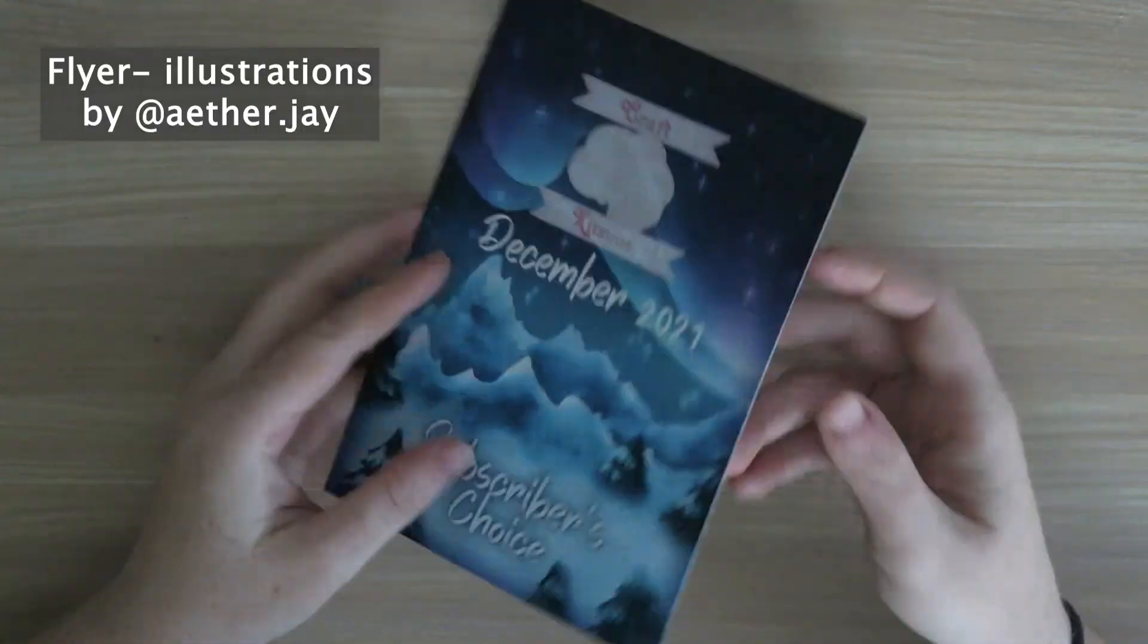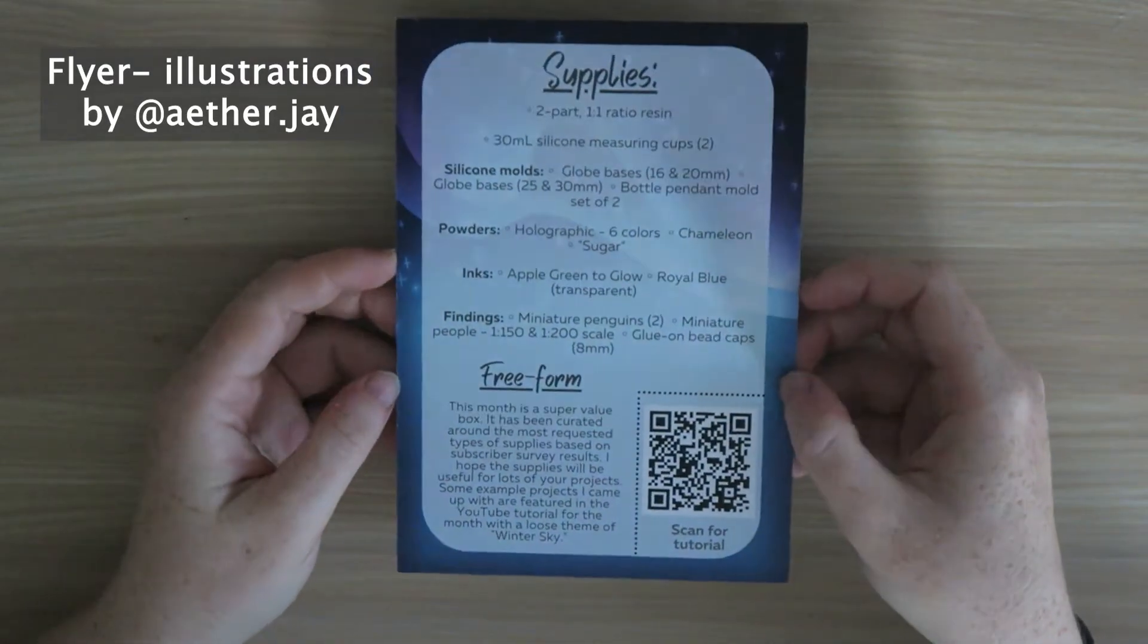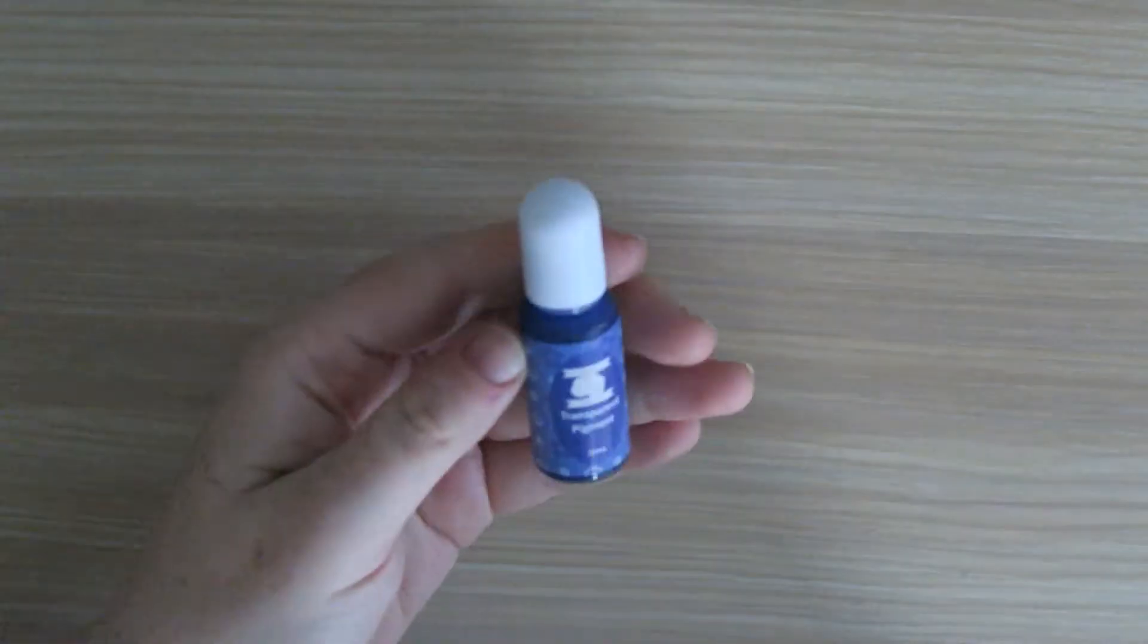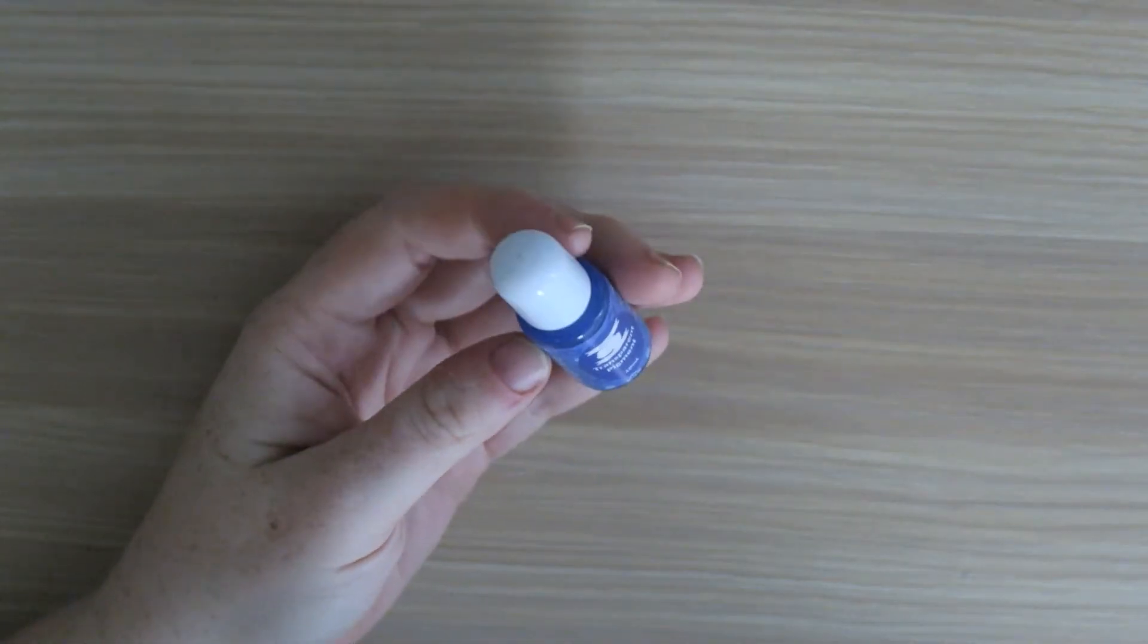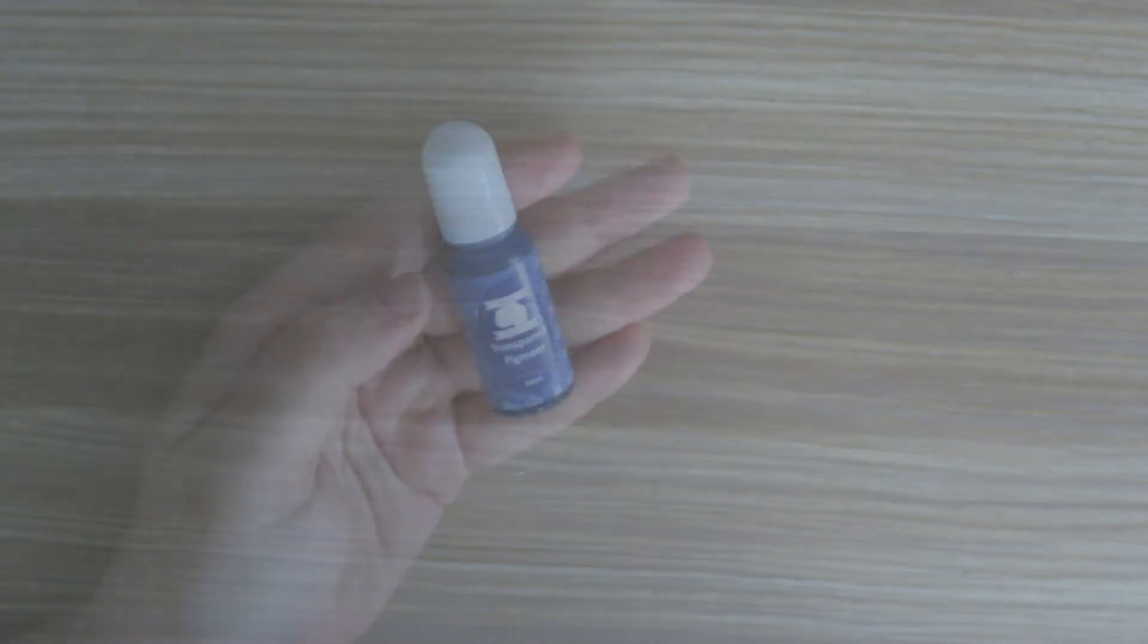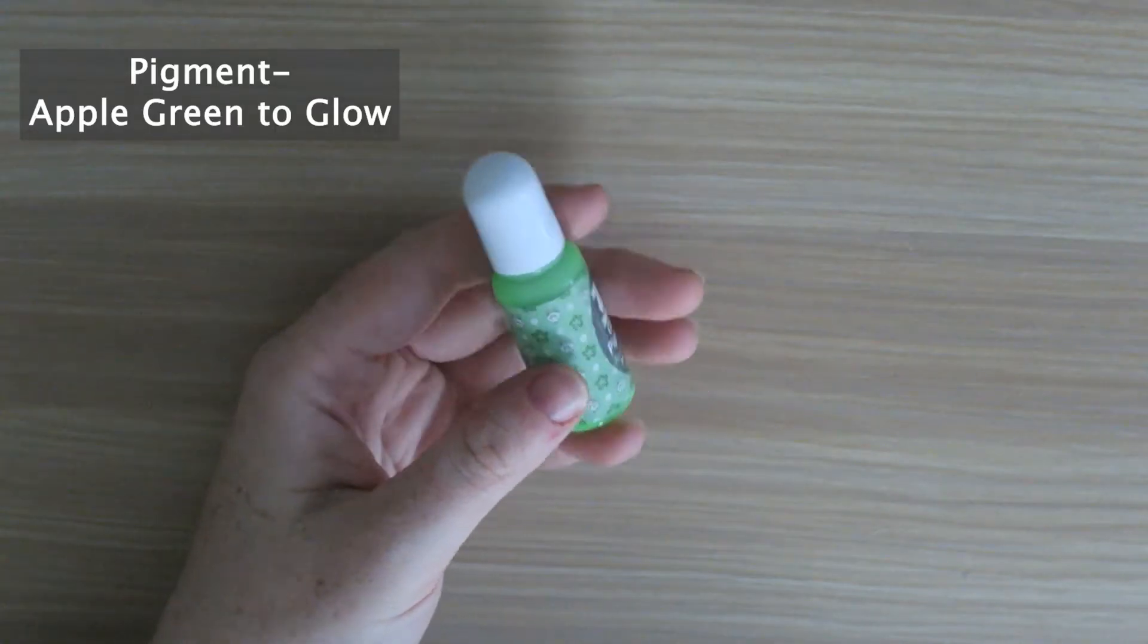First we have the flyer, and the illustrations are done as usual by my sibling. Next we have some two-part resin. Next we have a couple different pigments: a transparent pigment in sapphire and a green glow-in-the-dark pigment.